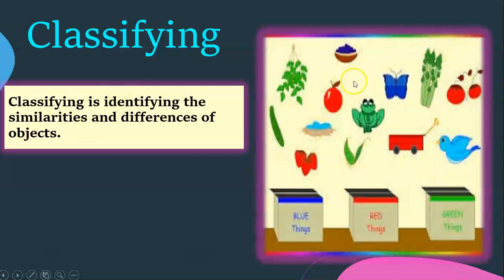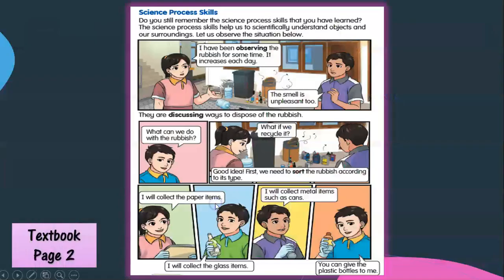Okay, let's look at the simple example here. So there are many objects here and you can classify the objects into three groups according to the colors - blue things, red things, and green things. So this is classifying.